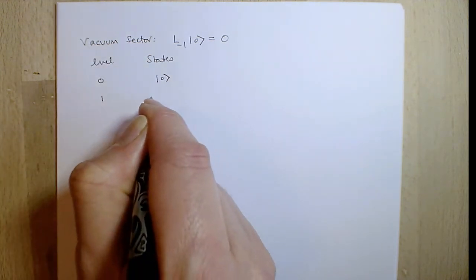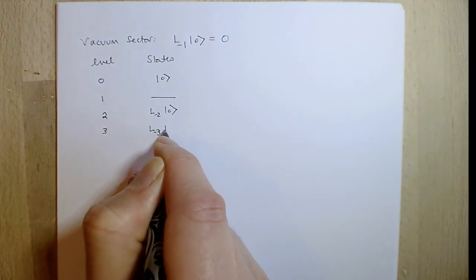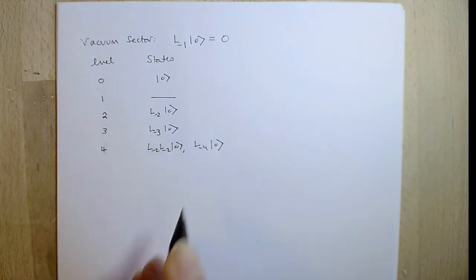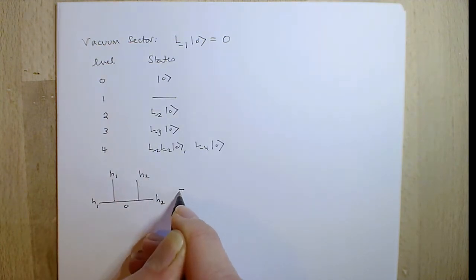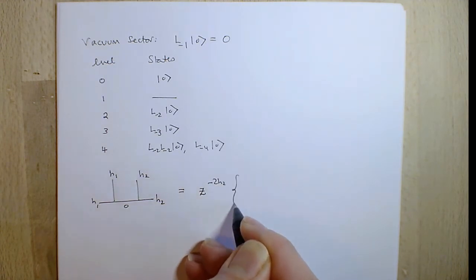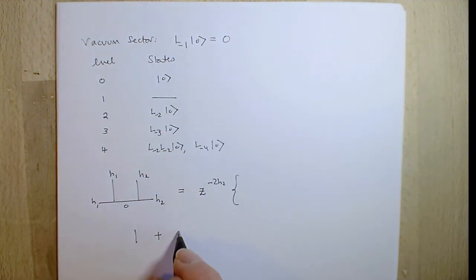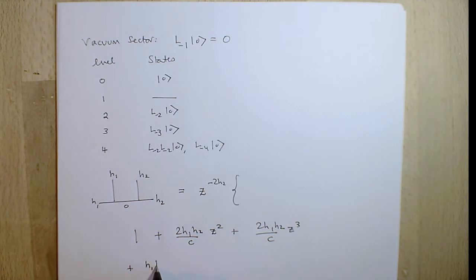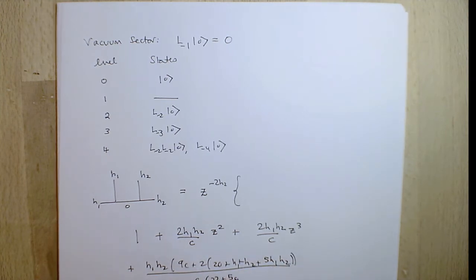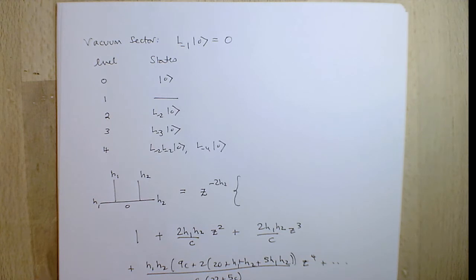Back to conformal blocks: in the vacuum sector, because L_{-1}|0> = 0, it's better to work with the smaller set of states without L_{-1}. Going through the same procedures in the vacuum sector (with h_1 and h_2 different), there is no z term, there is a z^2 term, a z^3 term, and a z^4 term. The z^4 term has a denominator with a pole at c = -22/5.